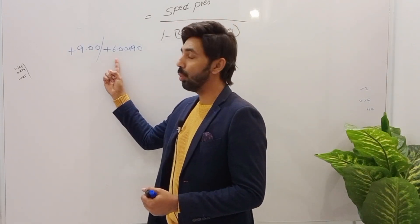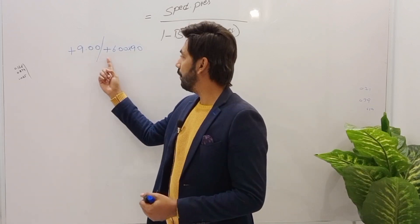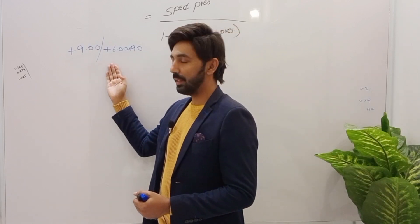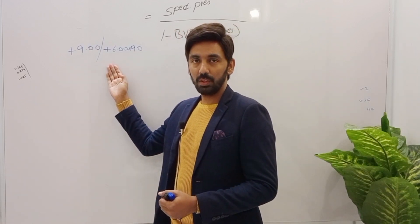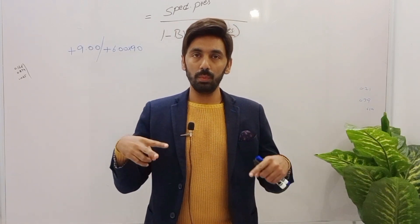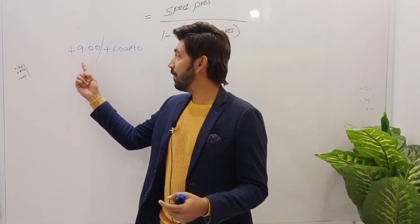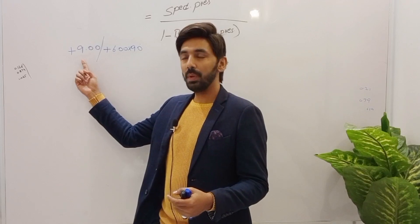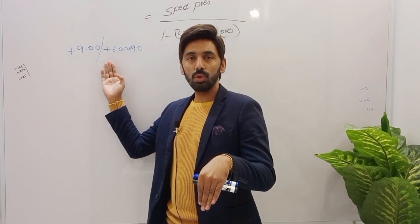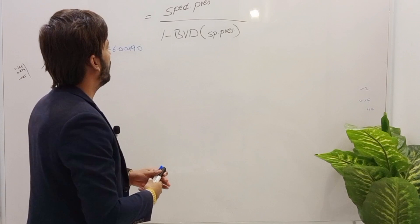Our first example has both spherical and cylinder with a plus sign: plus 9 spherical and plus 6 cylinder at 90 degrees. This is our toric spectacles prescription. A toric prescription is one in which we have both sphere and cylinder — sphere in plus form and cylinder in plus form.